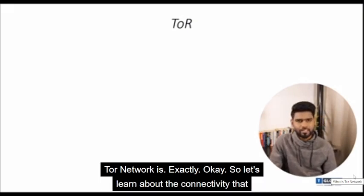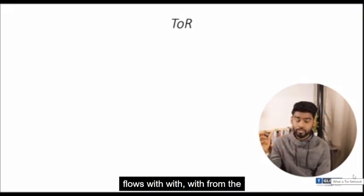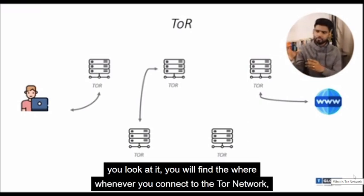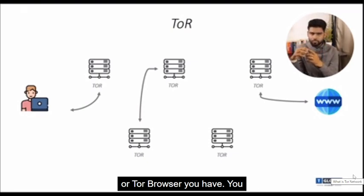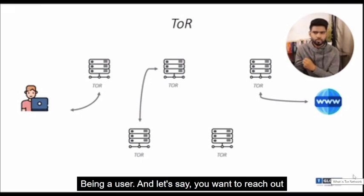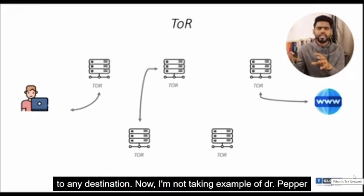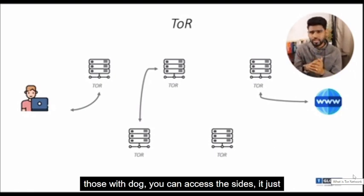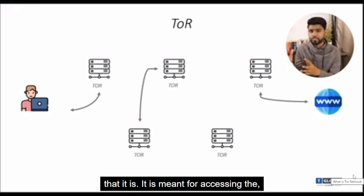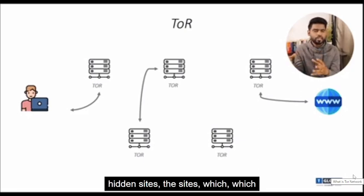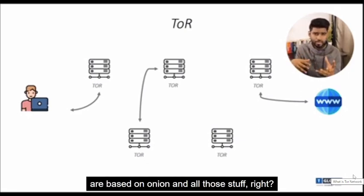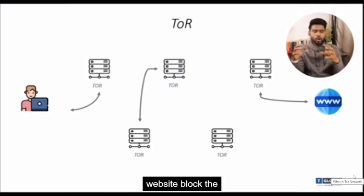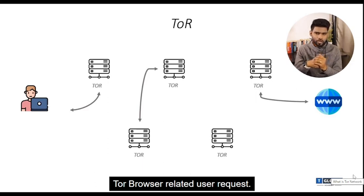Let's learn about the connectivity that flows from the user to the destination. Whenever you connect to the Tor network or Tor browser, you are accessing it as a user and you want to reach out to any destination. It doesn't have to be the dark web — it could be anything. You can access regular sites with Tor, though it is mainly meant for accessing hidden sites based on onion. Most search engine websites actually block Tor browser user requests.